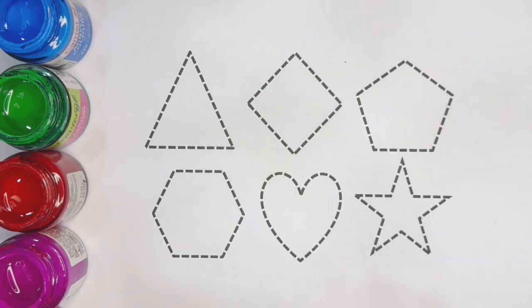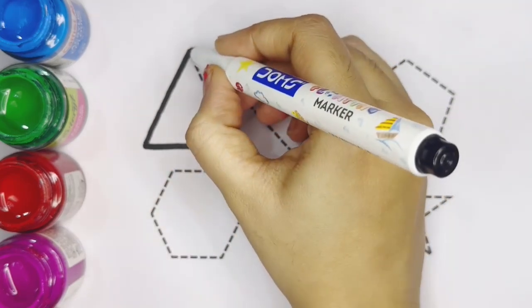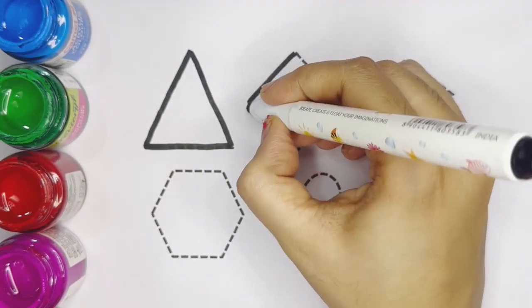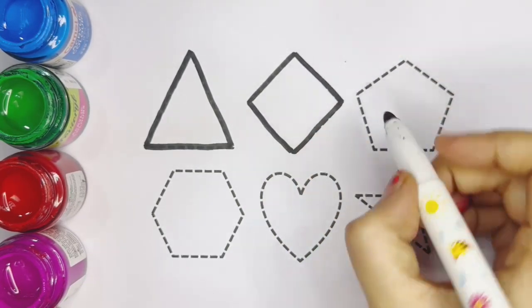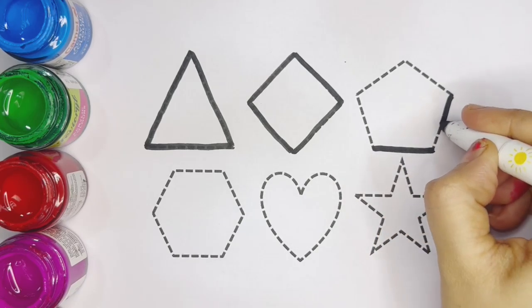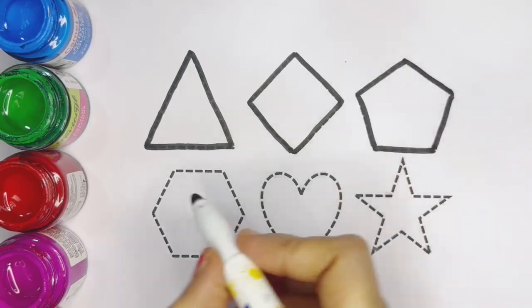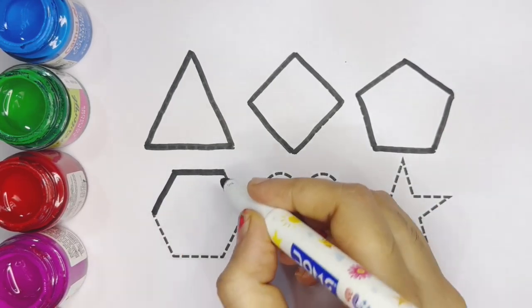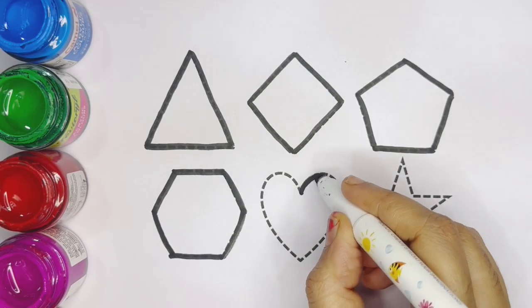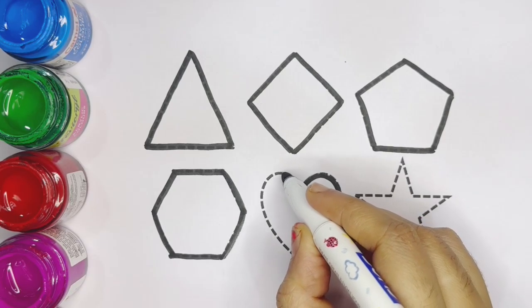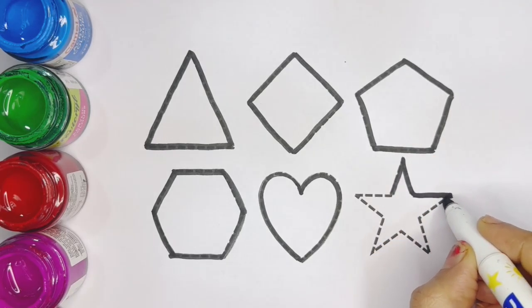Kids, let's draw the shapes. Triangle, this is triangle. Diamond, this is diamond. Pentagon, this is pentagon. Hexagon, this is hexagon. Heart, this is heart. Star, this is star.